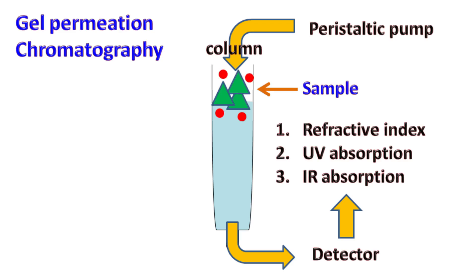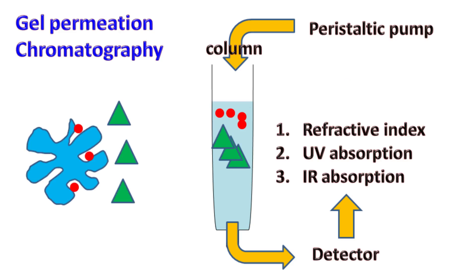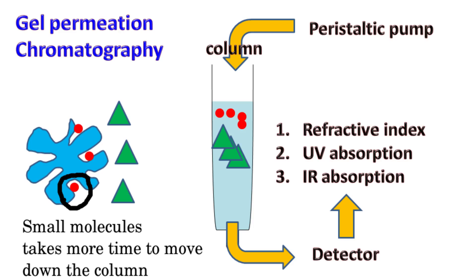When the sample along with the mobile phase is passed down the column, large molecules which are outside the beads easily move forward, while small molecules which are trapped in the pores of the beads take a longer time to move.